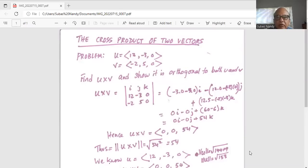Problem: we are given two vectors with the directional numbers 12, minus 3, and 0 for u, and v is minus 2, 5, and 0. First we find u cross v and then show that the product is orthogonal to both u and v.